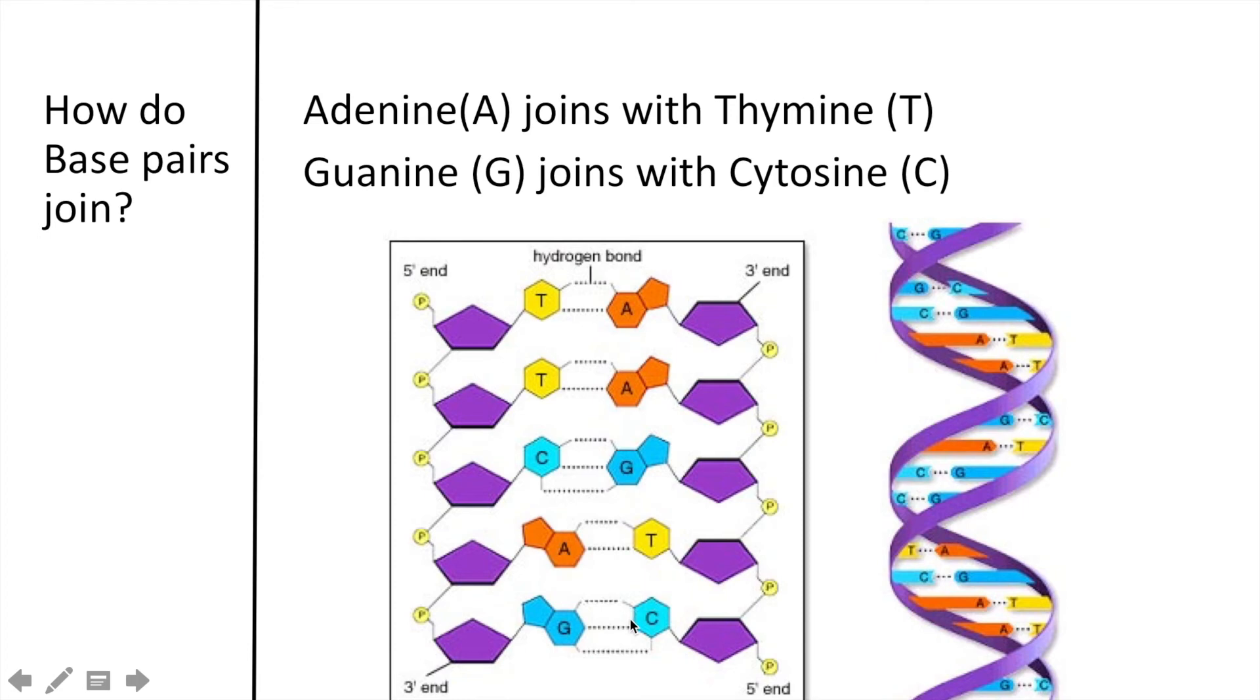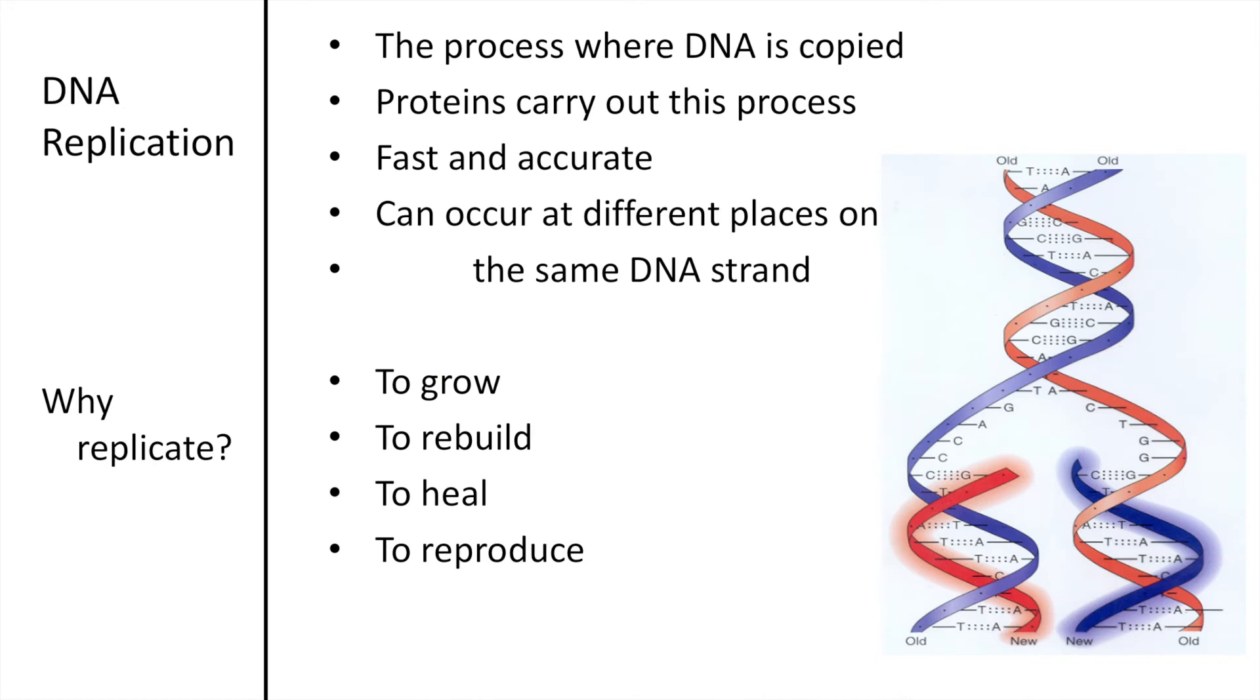DNA replication is the process where DNA is copied. Proteins carry out this process of DNA replication. It's fast, it's accurate, and it's occurring at different places on the same DNA strand. We need to replicate in order to grow, in order to rebuild and heal, and we need it to reproduce.